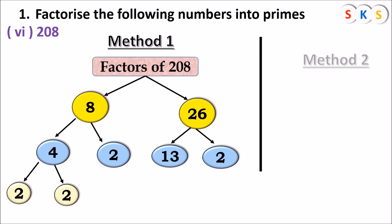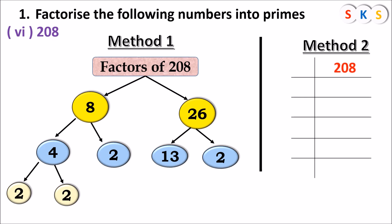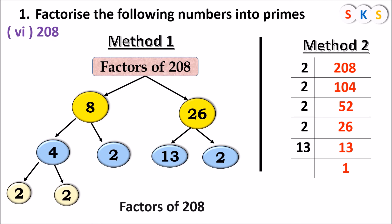Method 2 for 208: Divide by prime numbers. 208 ÷ 2 = 104. 104 ÷ 2 = 52. 52 ÷ 2 = 26. 26 ÷ 2 = 13. 13 ÷ 13 = 1. So the prime factors of 208 = 2 × 2 × 2 × 2 × 13.